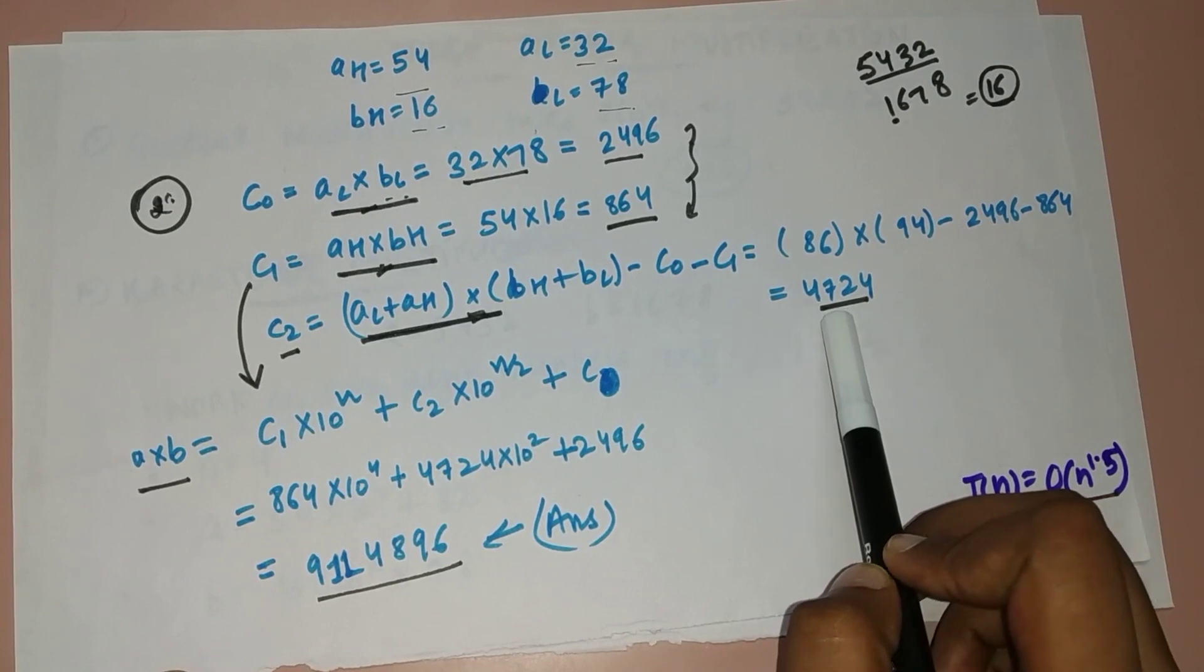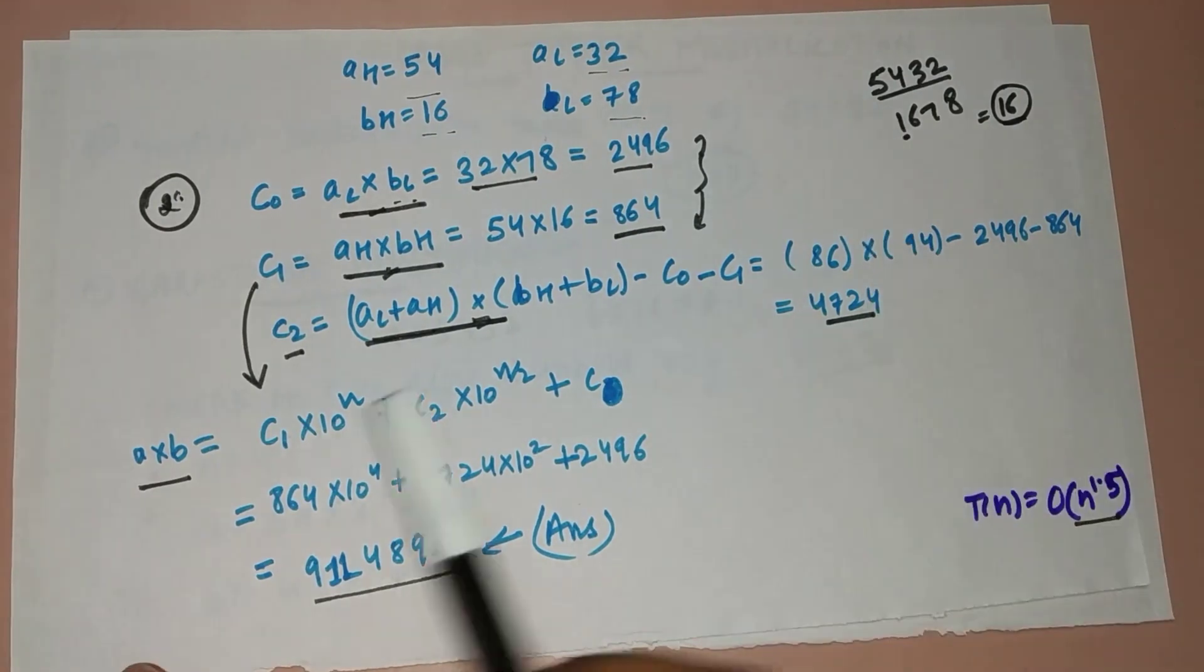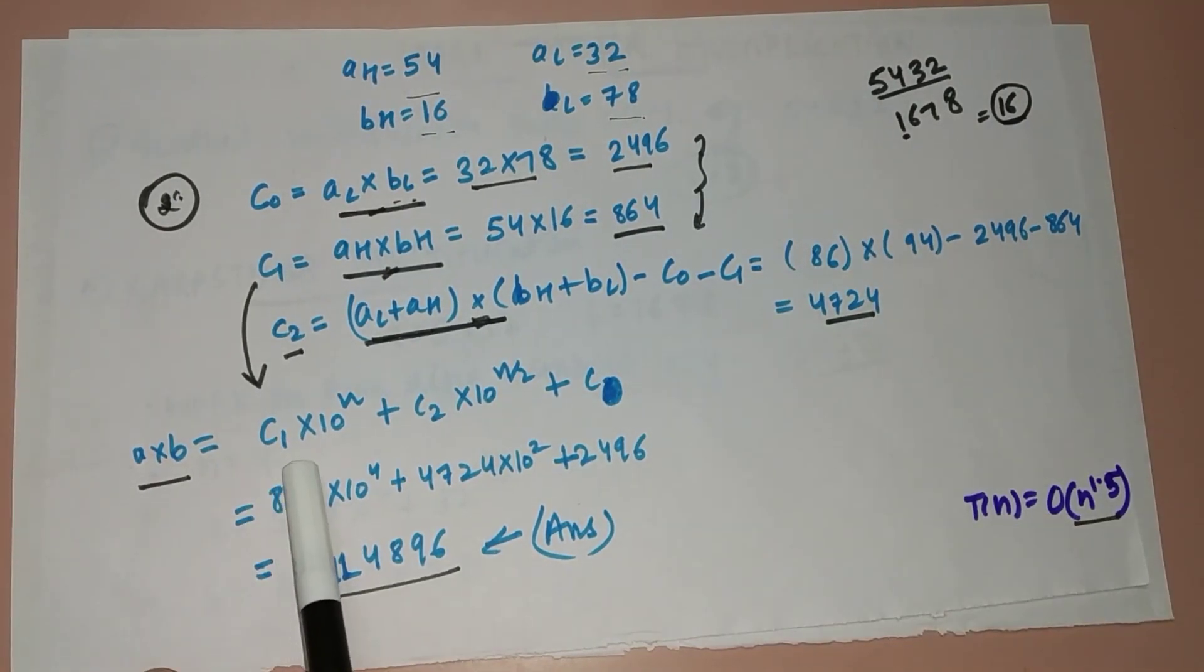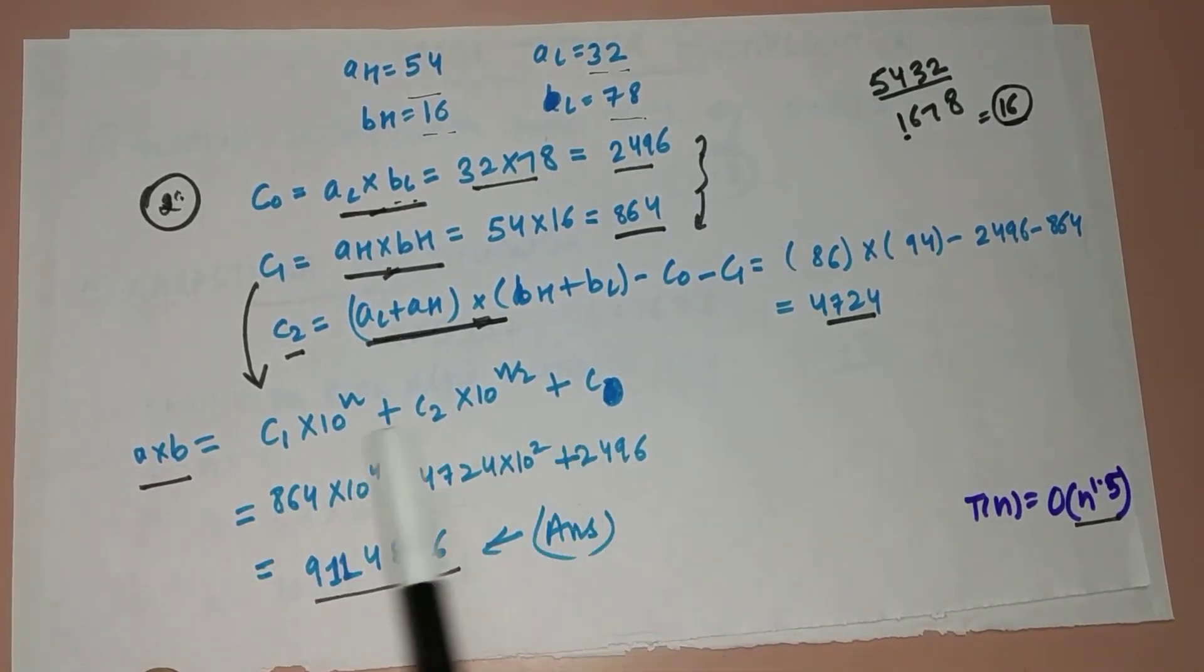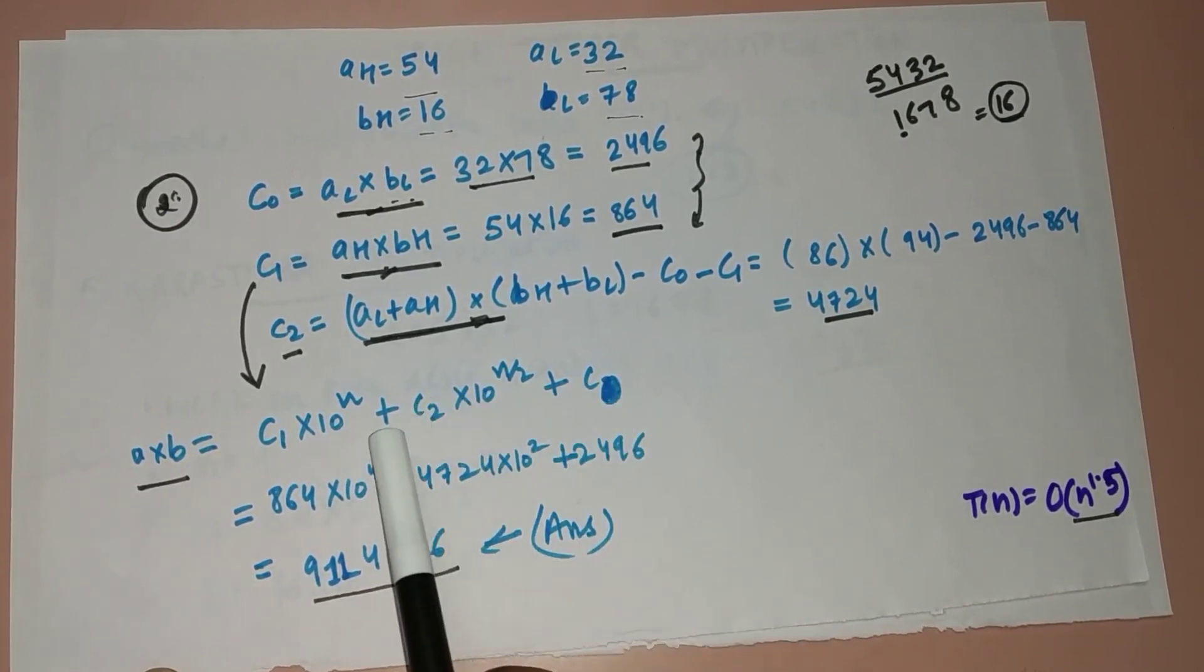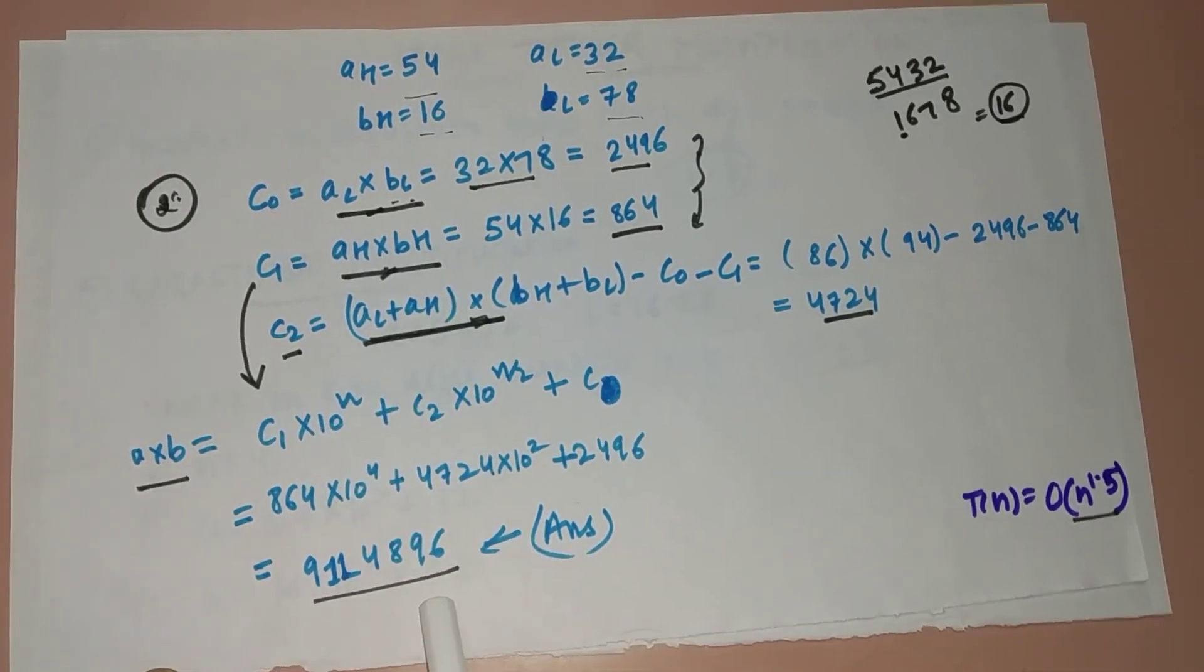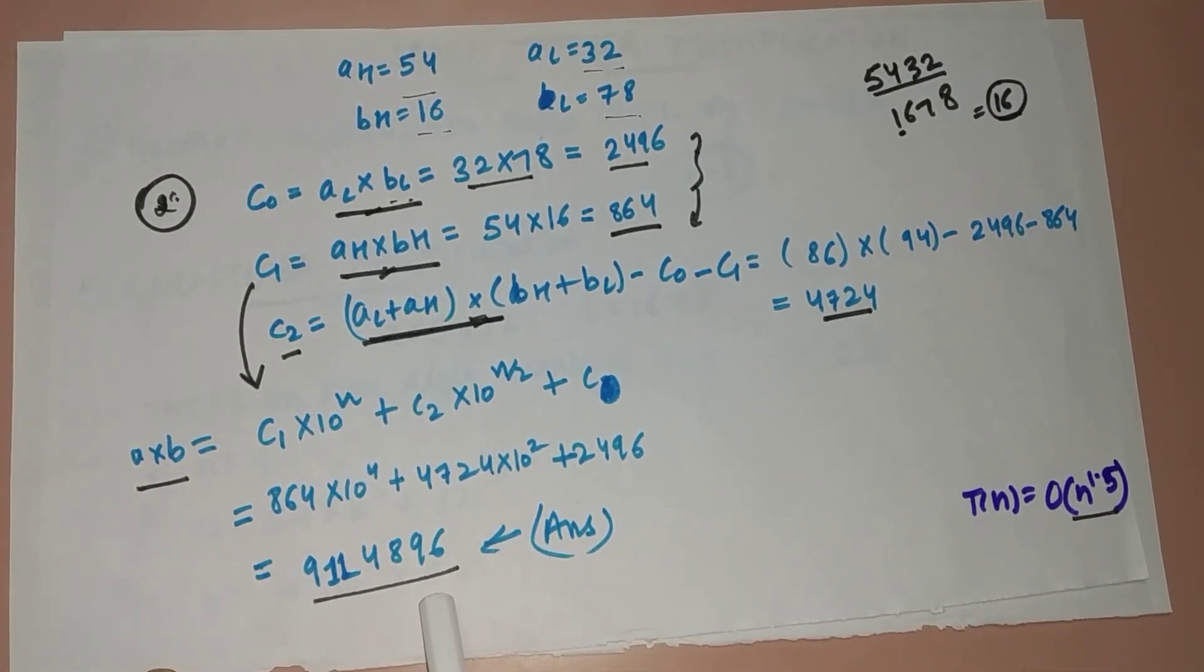Now our final result of multiplication when we multiply these two numbers will be c1·10^n + c2·10^(n/2) + c0. This is a general equation. Earlier our n was 4, so substituting all this value in this equation we got this result and this is our final multiplication solution.